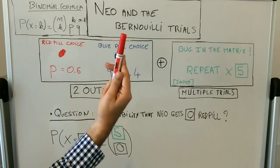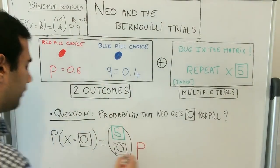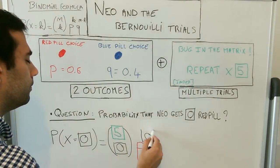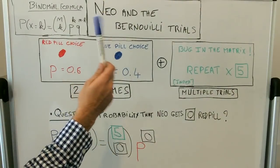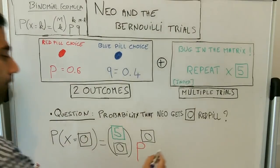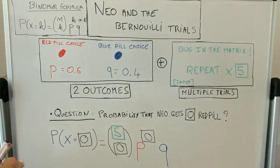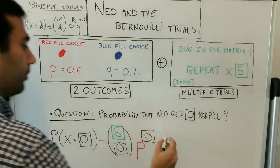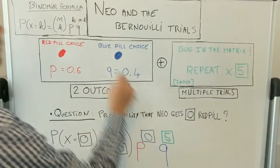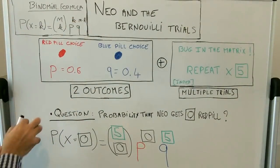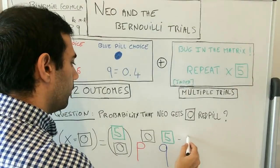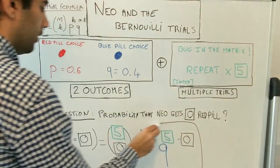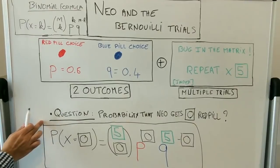So it's five choose zero, times P — the probability of success, i.e. picking the red pill — to the power zero, times Q — probability of failure — to the power five minus zero, which is five. Now we have the formula and we just need to replace the values to answer the question.